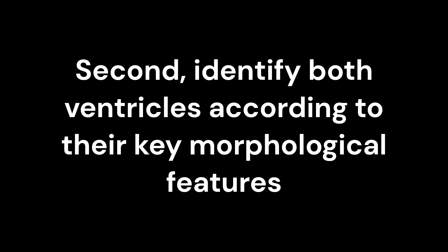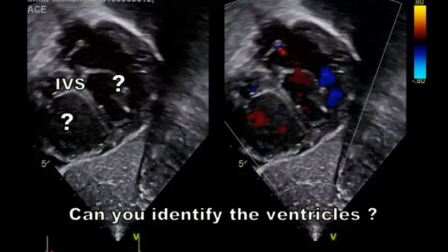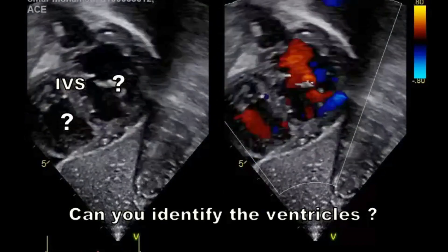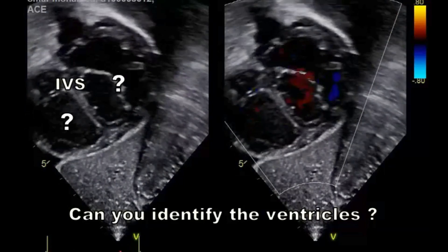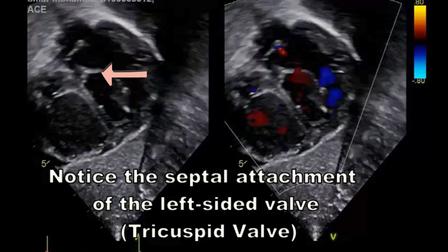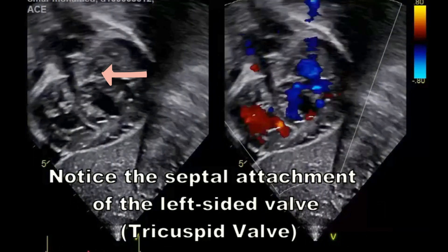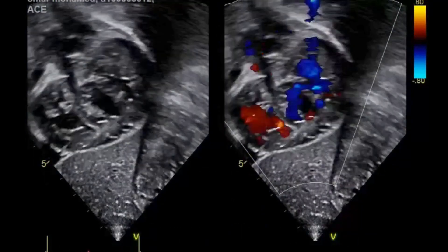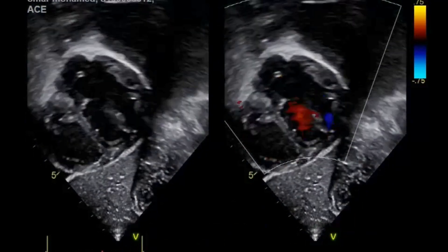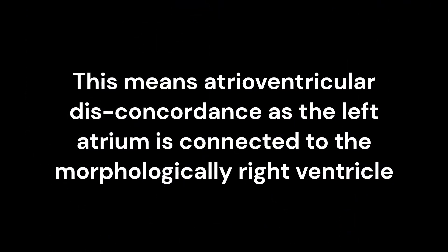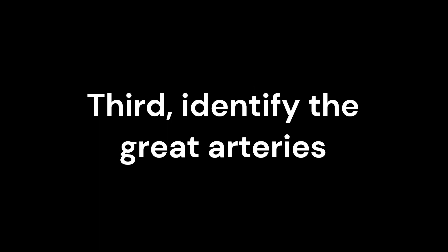Second, identify both ventricles according to their key morphological features. Notice the septal attachment of the left-sided valve — this identifies it as the tricuspid valve. This means atrioventricular discordance, as the left atrium is connected to the morphologically right ventricle.